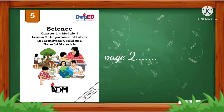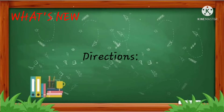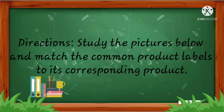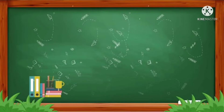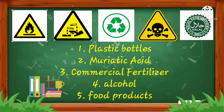For the next activity on page 2, What's New? The direction is: Study the picture below and match the common product labels to its corresponding product. For number 1, which common product label corresponds to plastic bottles? For number 2, what common label corresponds to muriatic acid? For number 3, what common label corresponds to commercial fertilizer? For number 4, what common label corresponds to alcohol? And for number 5, what common product label corresponds to food products?